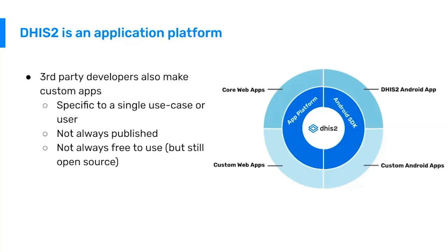The third-party applications are not always published — they could just be for one country. But we do see an increasingly large number of third-party applications being made generic, so they could be used in any DHIS2 database and published on our app hub. They are also not always free to use. Different organizations have different approaches to sustaining these applications, such as a freemium model where the base functionality is free but additional new functionality or services are at cost.